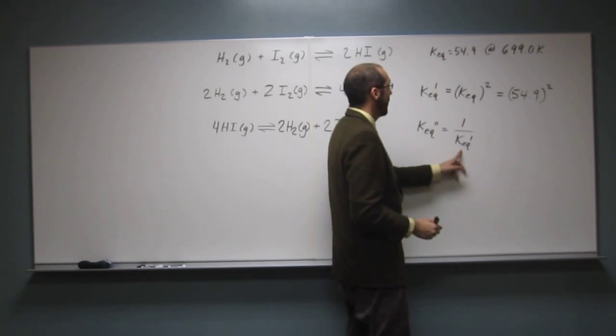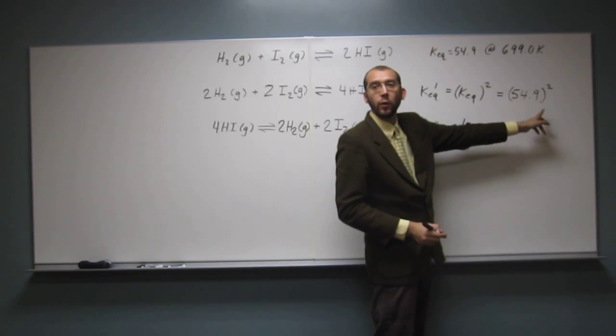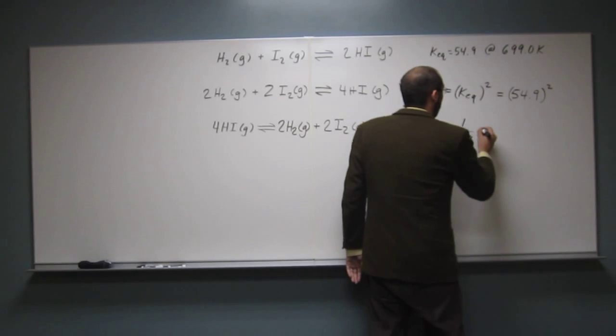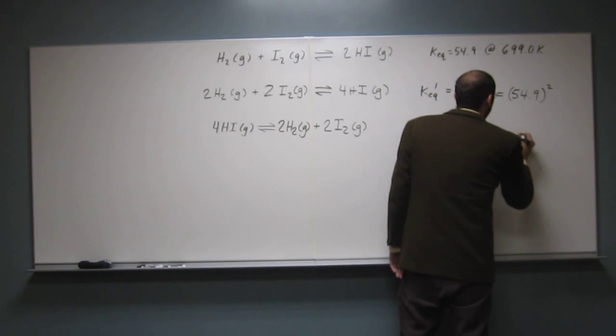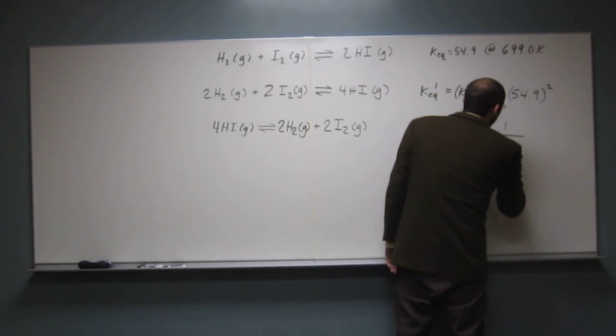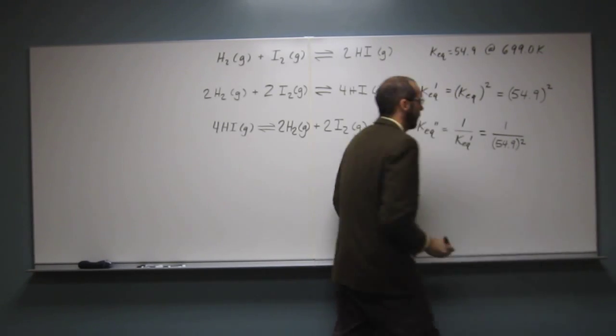So what is KEQ prime? Well, it's 54.9 squared, right? So let's write that in. So let's just solve for KEQ double prime now. So we've got 1 over 54.9 squared, like that.